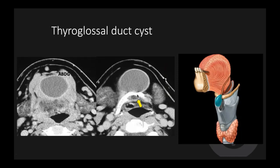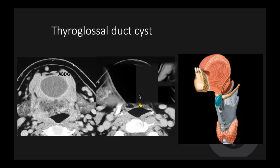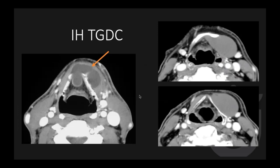Thyroglossal duct cyst is a very common cystic lesion in the head and neck. This is a suprahyoid thyroglossal duct cyst between the anterior belly of the digastric muscle, extending anterior and also posterior to the hyoid bone, which is a classic appearance. Infrahyoid thyroglossal duct cysts can be off-midline or multilobulated, and they sometimes extend into the pre-epiglottic space between the thyroid lamina through the thyrohyoid membrane. Notice it is still embedded into the strap muscle, deep to the strap muscle.